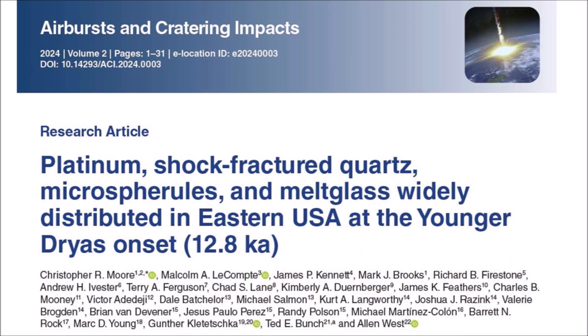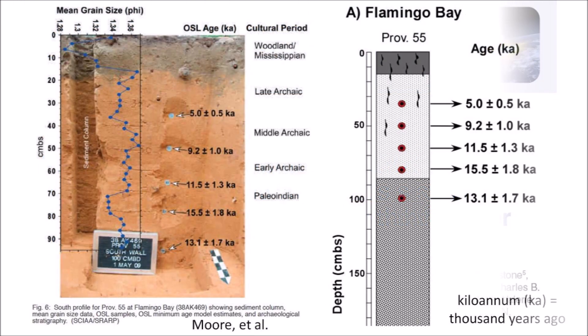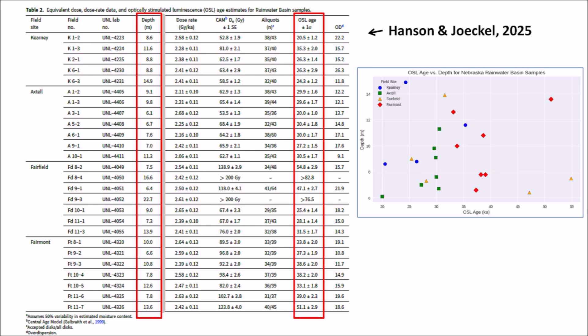It is instructive to compare the OSL dating methodology used by Hanson and Jockel for the lunettes of the Nebraska basins with the methodology used by Moore et al. in the study of Flamingo Bay in South Carolina. Christopher Moore and his co-authors determined the OSL dates at different depths in the same core, enabling them to correlate the stratigraphy with the temporal chronology of the layers and identify inverted stratigraphy in the rim of Flamingo Bay. The single OSL dates at each location in the Hanson and Jockel paper are not sufficient to determine the chronological layering of the terrain.